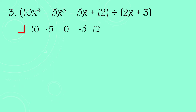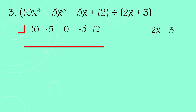Since the leading coefficient of the divisor is 2, we divide both terms by 2: 2x + 3 becomes x + 3/2. Then we take the opposite sign of 3/2, which is negative 3/2. That negative 3/2 is our divisor value for synthetic division.